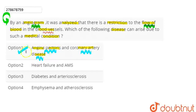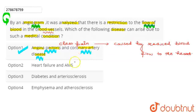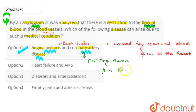Because if we talk about angina and coronary artery disease — angina is the type of chest pain which is caused by reduced blood flow to the heart. And coronary artery disease is concerned with the narrowing of the coronary arteries, which limits the blood being pushed to the heart.